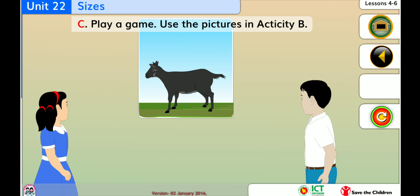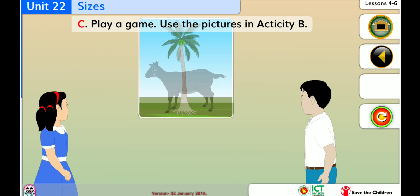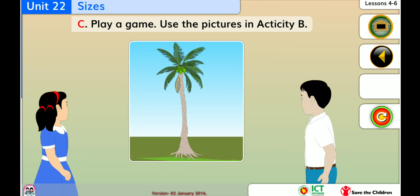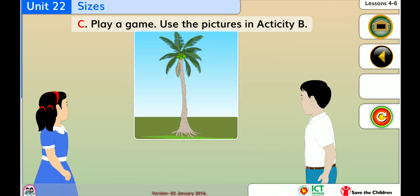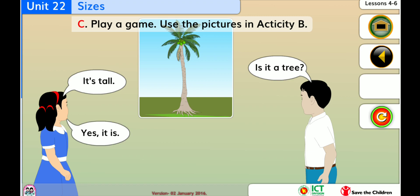Play a game. Use the pictures in Activity B. It's a tree. It's fat. Is it a goat? Yes, it is. It's tall. Is it a tree? Yes, it is.